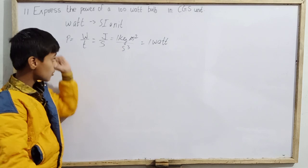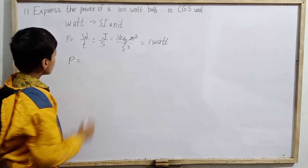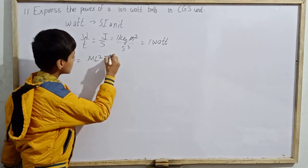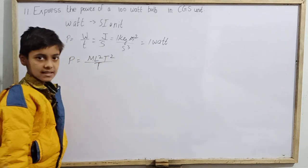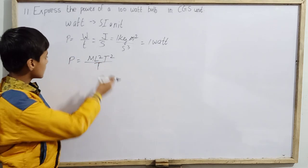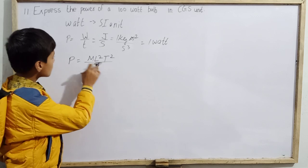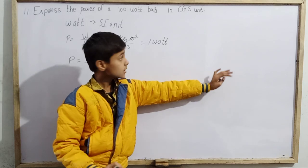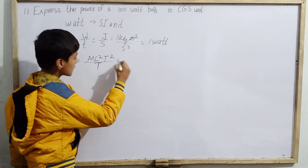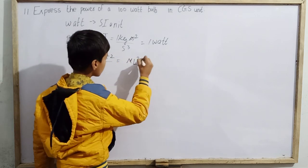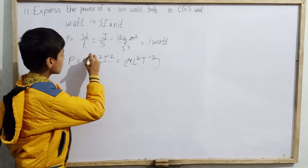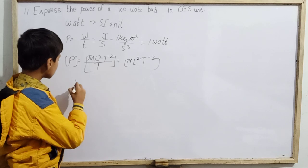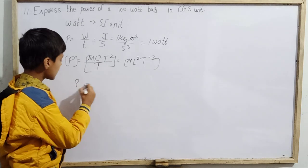1 watt equals kg·m²/s³. The dimensional formula for power is ML²T⁻³, since work is ML²T⁻² (same as energy, W = Fs), and dividing by T gives ML²T⁻³. If you put units in the dimensional formula: mass = kg, length squared = m², and T⁻³ = per second cubed.